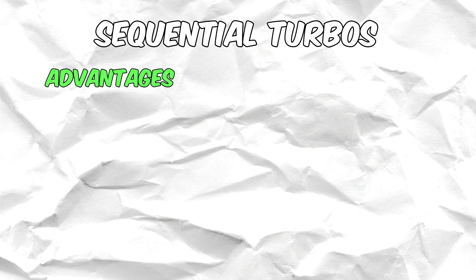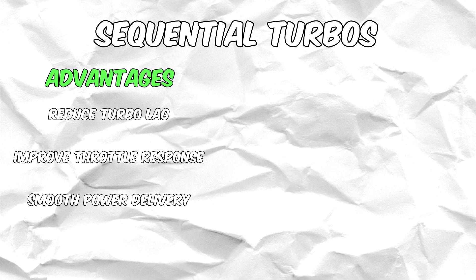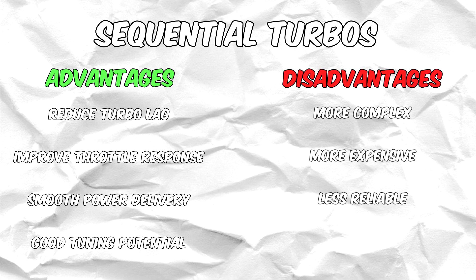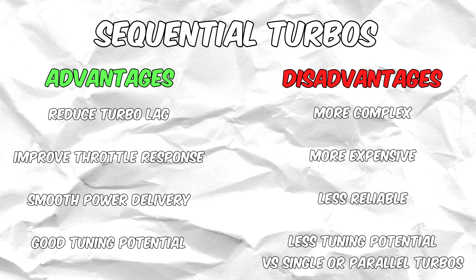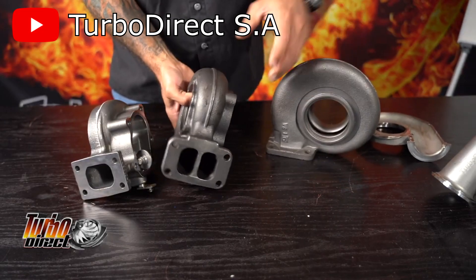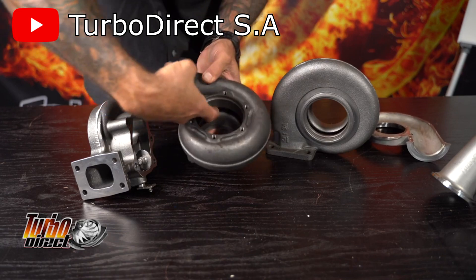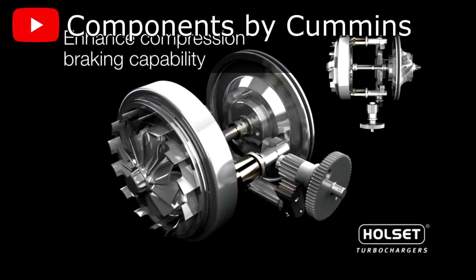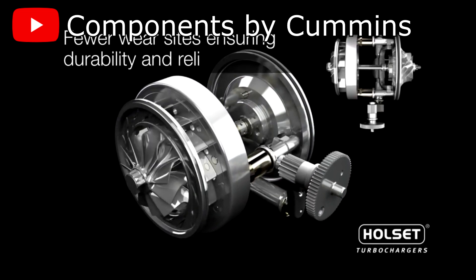The advantages of sequential turbo setups are that they reduce turbo lag, improve throttle response, and provide smooth power delivery while also being able to produce plenty of power. However, the disadvantage is that they are much more complex, expensive, and tend to be less reliable with less tuning potential in comparison to single or parallel turbo setups. Additionally, sequential setups are largely unused in modern cars thanks to new technologies such as twin scroll turbos and variable geometry turbo technology, which have pretty much removed the need for a sequential setup.